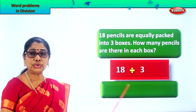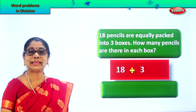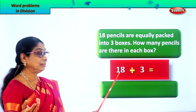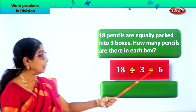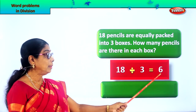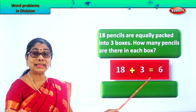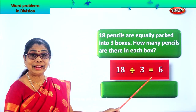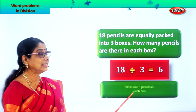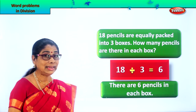Now, 3 goes into 18 how many times? Say the tables orally: 3 ones are 3, 3 twos are 6, and 6 threes are 18. So 6 times — 6 threes are 18 — your answer is 6. The question asks how many pencils in one box: 6 pencils. Six pencils in each of the three boxes — 6 threes are 18. There are 6 pencils in each box.